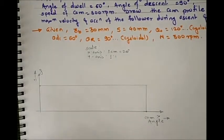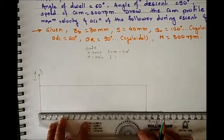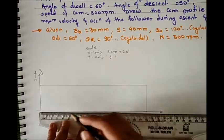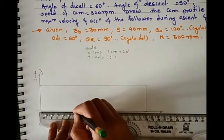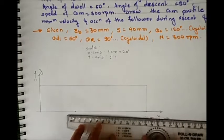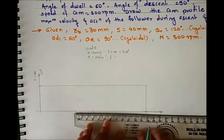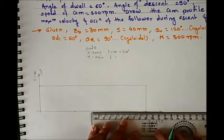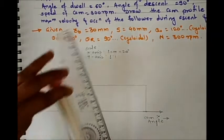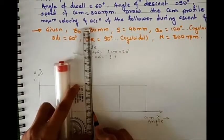Now let's divide the cam angle into outstroke, dwell, and return. Outstroke is 120 degrees, divided by 20, gives 6 cm. Dwell is 60 degrees, so it is 3 cm. Return is 90 degrees, so it is 4.5 cm. Draw a vertical line from each of these cam angle divisions.